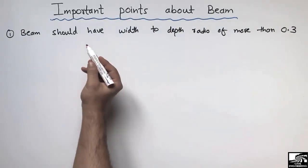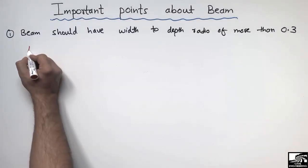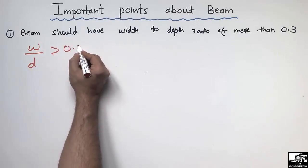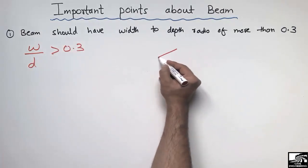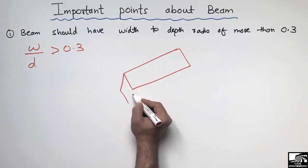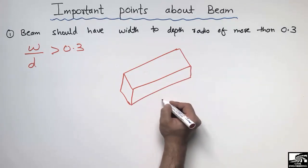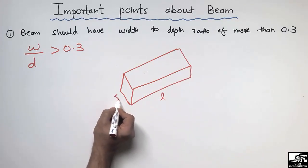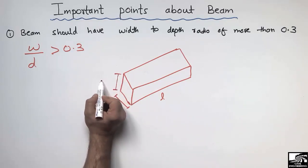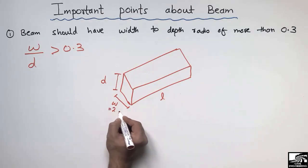The first point states that the beam should have a width-to-depth ratio of more than 0.3. So the width and depth ratio should always be greater than 0.3. If I consider the beam in 3D — let's suppose this is a beam — this is the length of the beam, this is the width, and this is the depth or height of the beam.